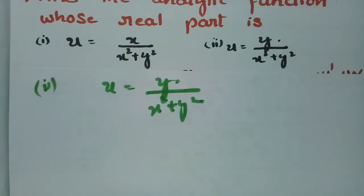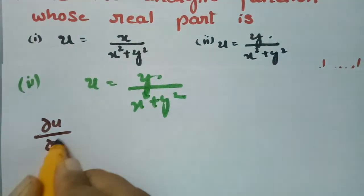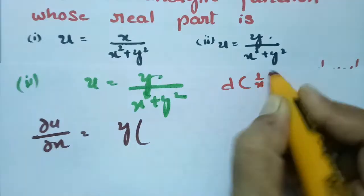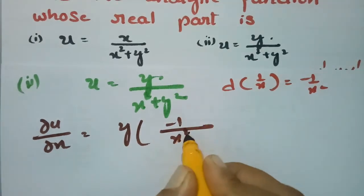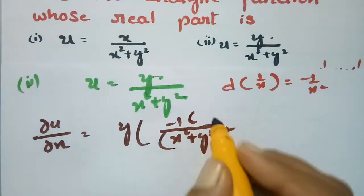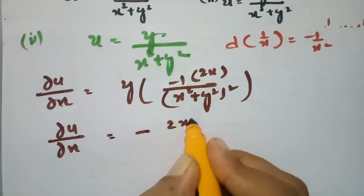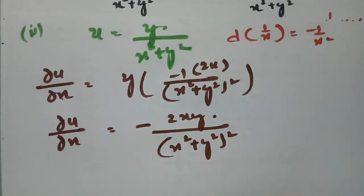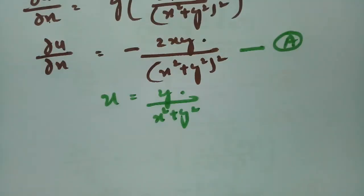I am going to differentiate u = y/(x²+y²) with respect to x first. With respect to x, y is constant. Using the derivative rule for 1/x being -1/x², differentiating (x²+y²) with respect to x gives 2x. So ∂u/∂x = -2xy/(x²+y²)², which is equation (a).